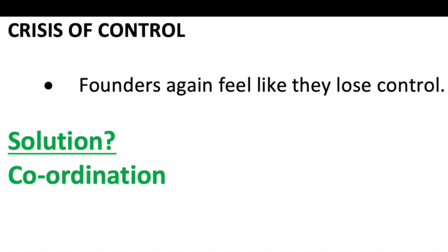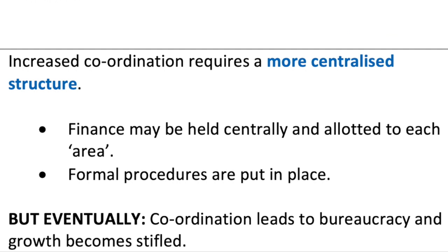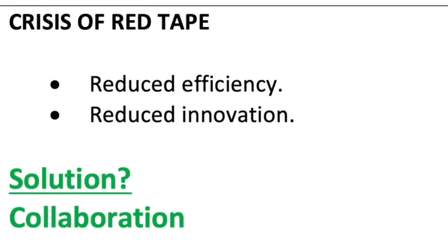The solution to the autonomy crisis is delegation, leading to growth through delegation. Experienced managers begin making decisions and increasingly delegate to their subordinates. However, this creates a communication gap between the founders and those executing day-to-day decisions, since delegation may have gone from founders to managers to subordinates. This leads to the crisis of control, where founders again feel they are losing control. Since a defined management structure already exists, the solution this time is coordination.